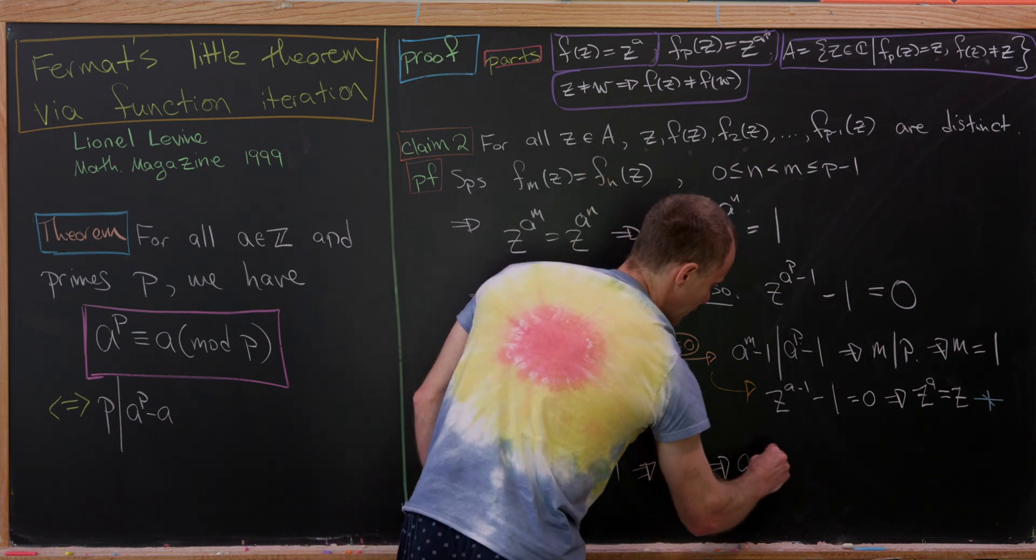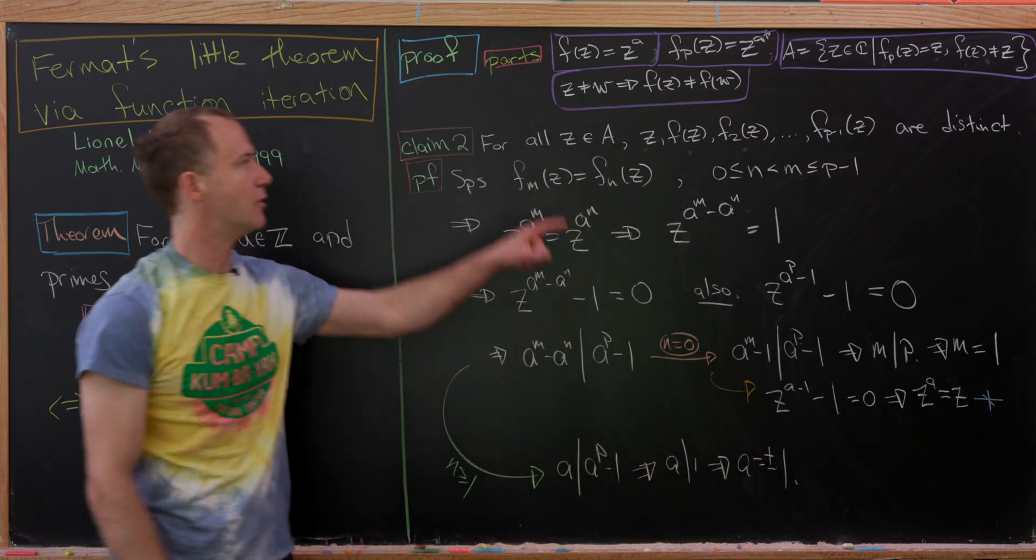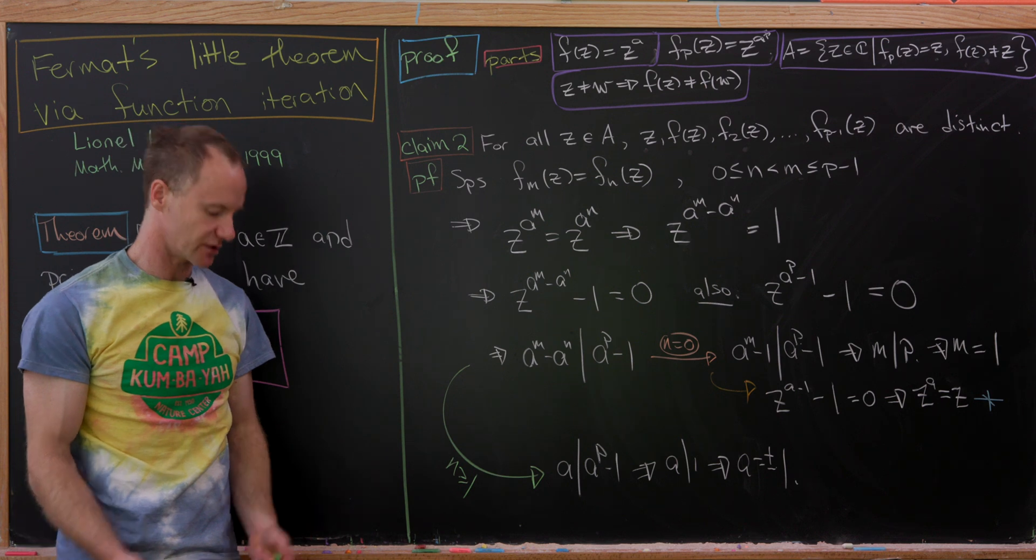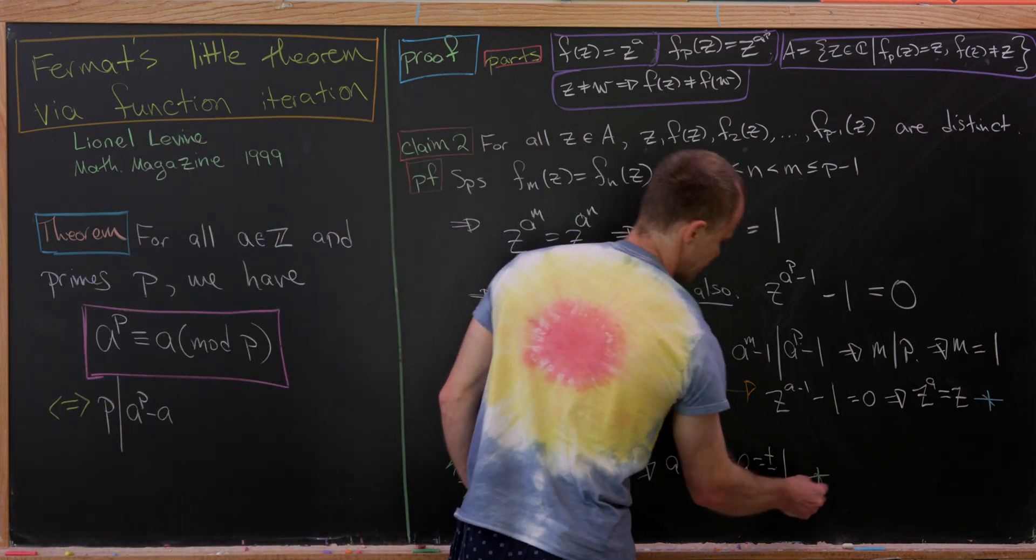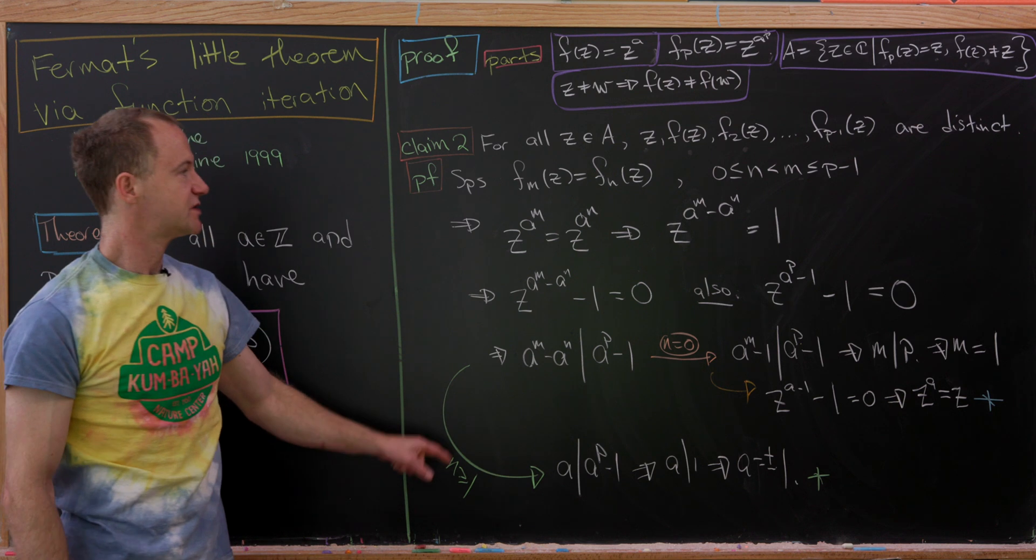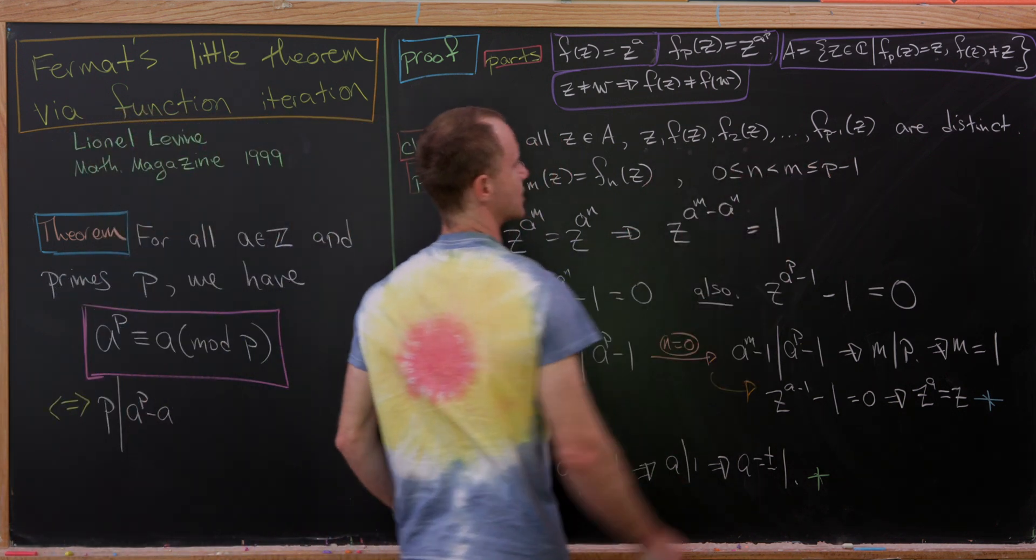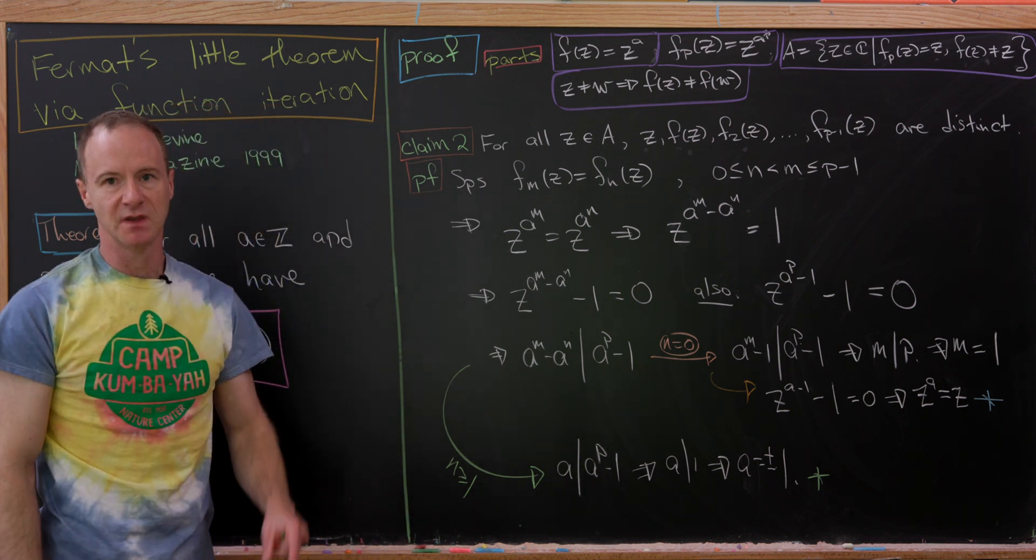So A divides the left part. That means A must divide the right part. So A divides A to the P minus 1. Oh, but that means that A divides 1. Oh, but that means that A equals plus minus 1. Oh, but we assumed, well, at the beginning it's gone now, that A was bigger than or equal to 2. So that led to a contradiction as well. So that means that, well, now we've got it. All of these numbers are distinct.